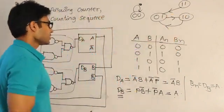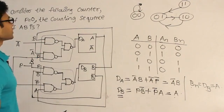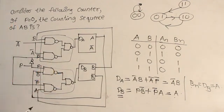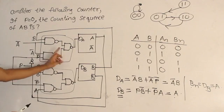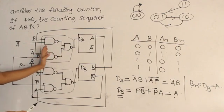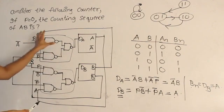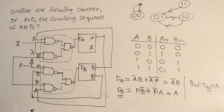This is the state diagram and counting sequence we got. The key point is: even though it is NAND-NAND, consider it as AND-OR and everything will be straightforward.